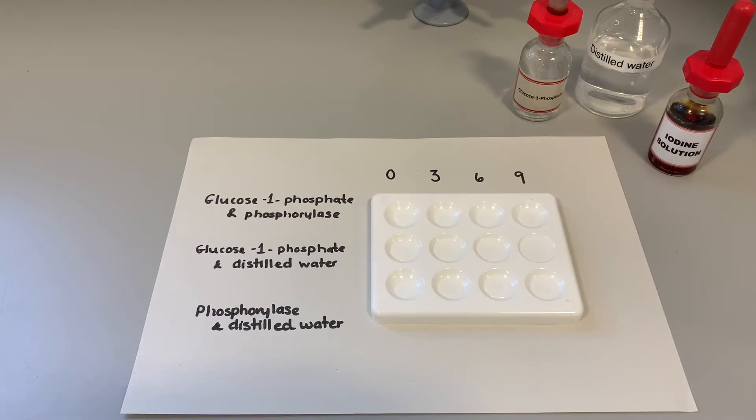And the last one is also a control. This time the enzyme phosphorylase is in with distilled water. Again, two substances to make sure that the volume is the same. And what that row is going to do is hopefully prove that phosphorylase does not turn into starch by itself. The only combination that will produce starch is glucose 1-phosphate and phosphorylase.